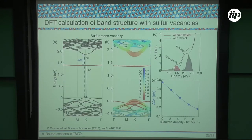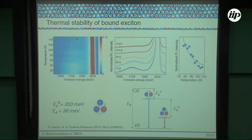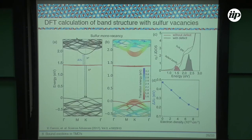To truly prove that this PL band comes from bound excitons, we performed DFT calculations of the band structure with mono-sulfur vacancies. We obtained the band structure with a mid-gap state shown in red. The position of this mid-gap state relative to the conduction band is exactly 300 meV — matching the difference between the neutral exciton and the bound exciton peak positions. These mid-gap states are responsible for trapping the neutral exciton to form the bound exciton.